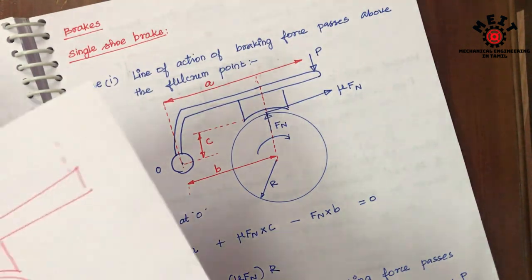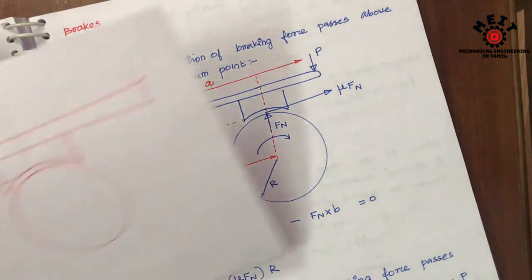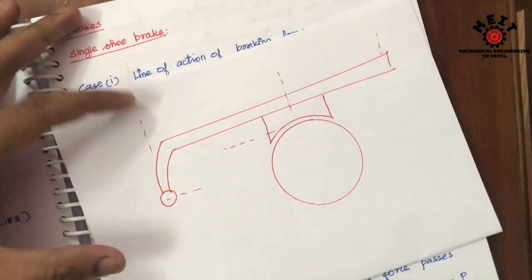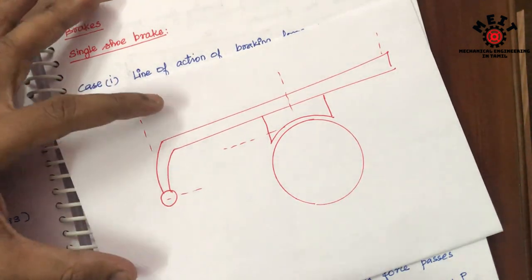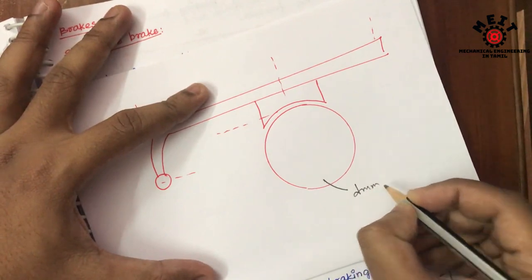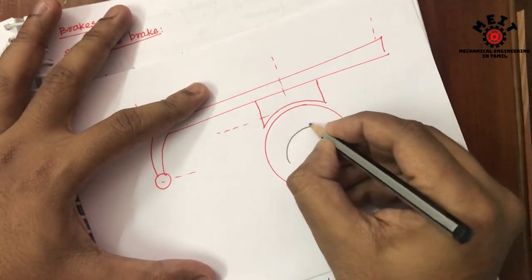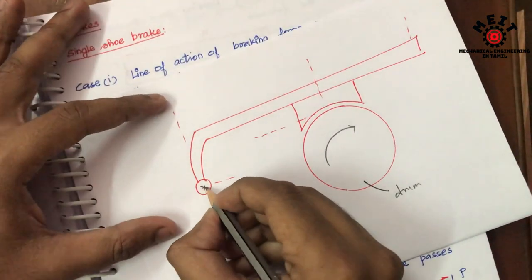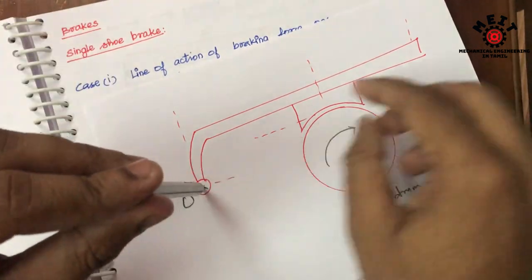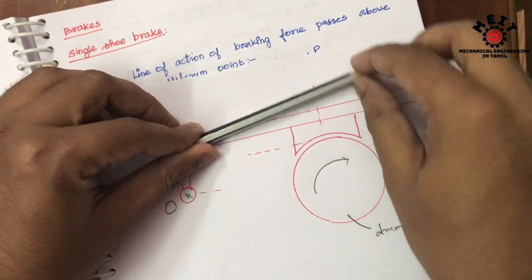Let me take a single shoe brake. This will be the drum, and this will be the pivot point O. The lever will be fixed.